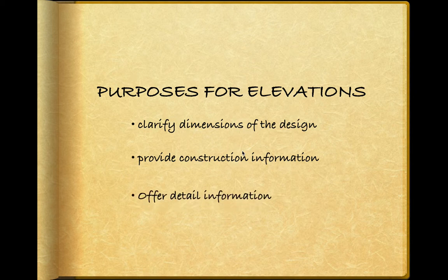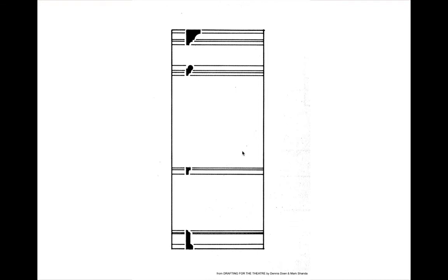Elevations offer detail information that's needed by the scene shop to complete the scenic design. For this example, we have a wall unit that has several moldings on it. Notice how we have what are called revolved sections or cross cuts of each of those cornices so the scene shop can see the physical dimension of each one of them.